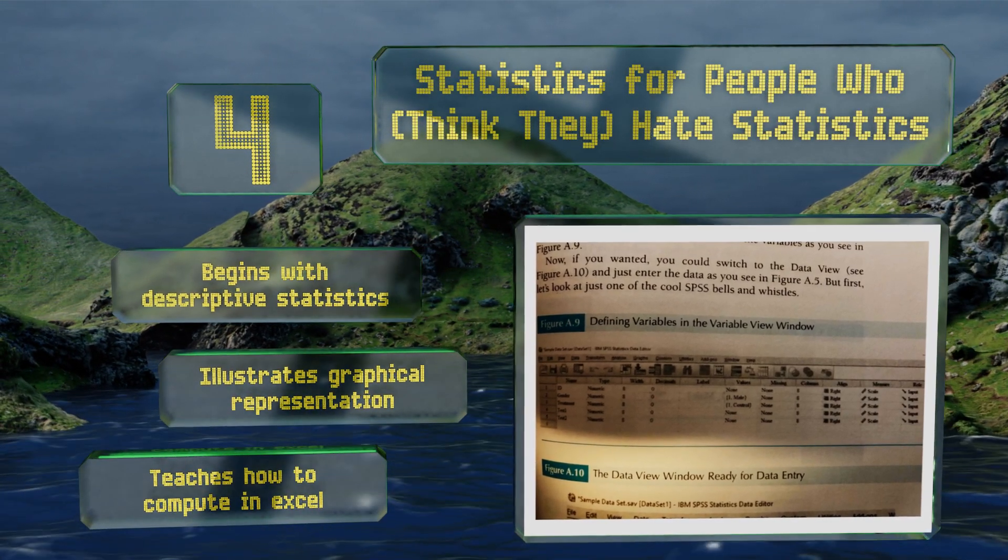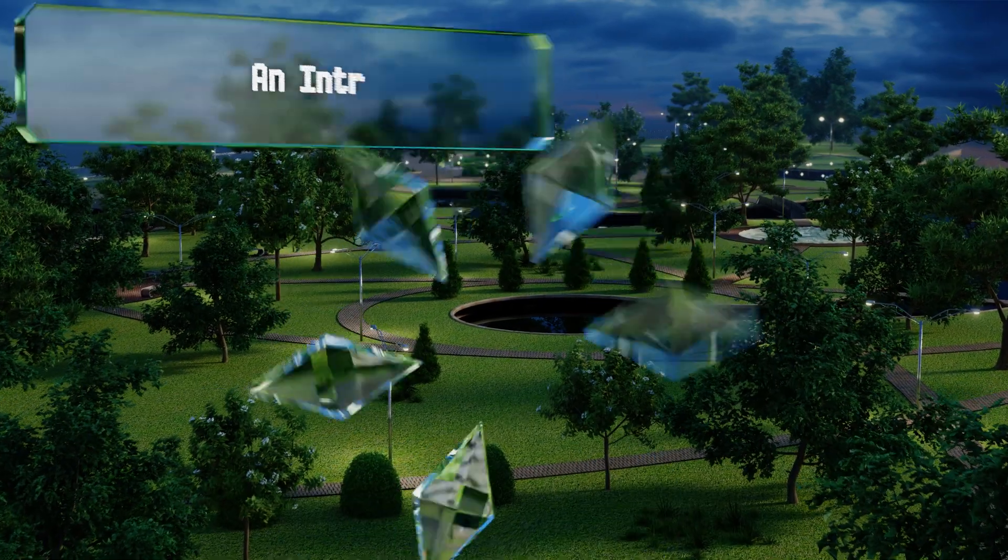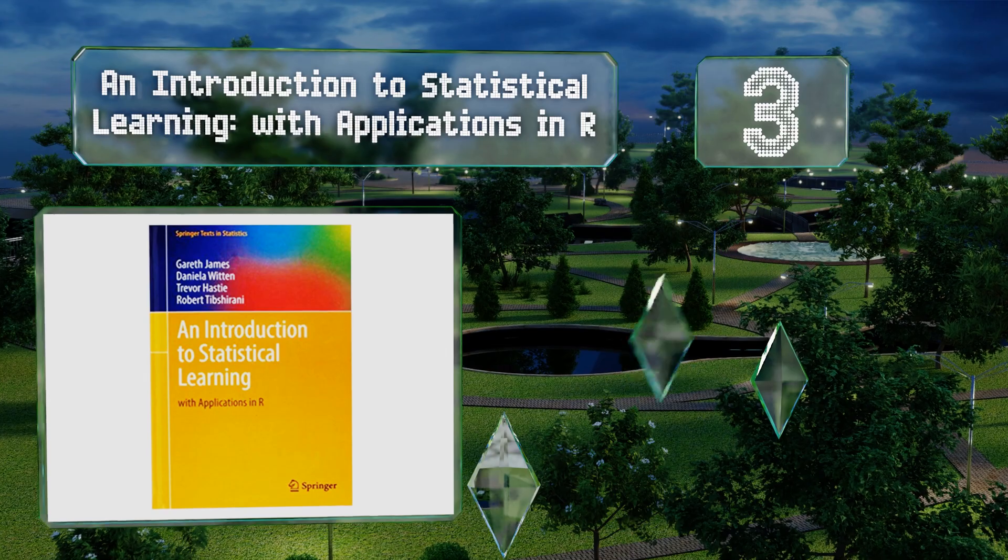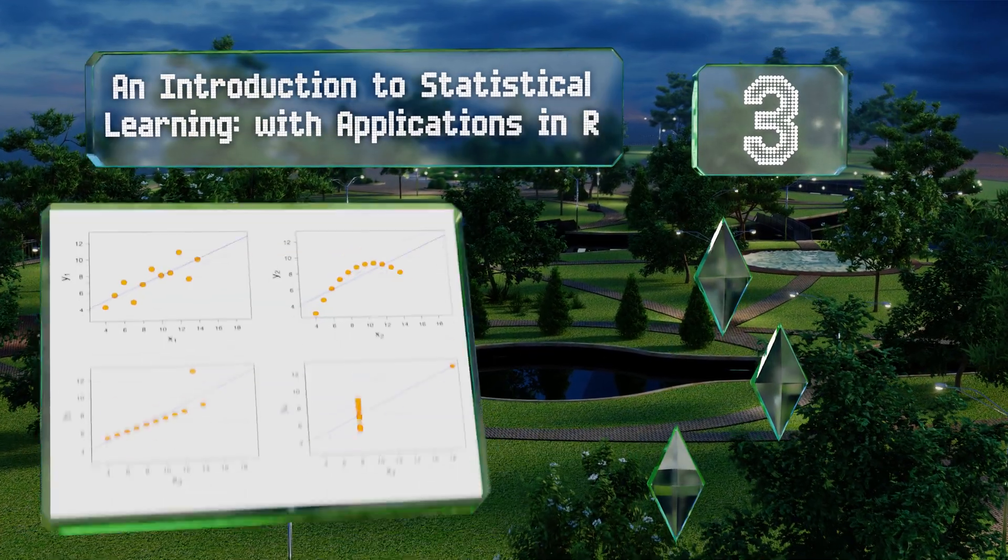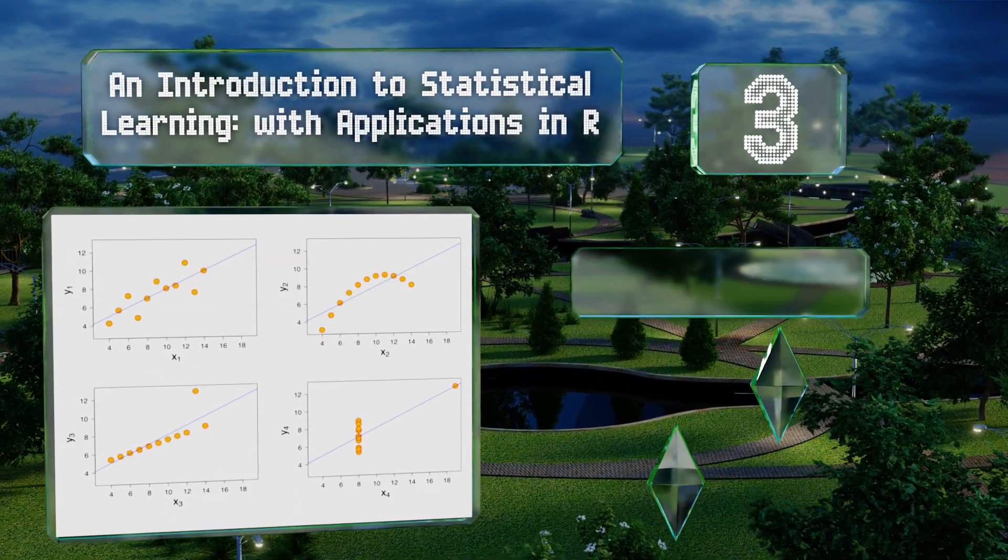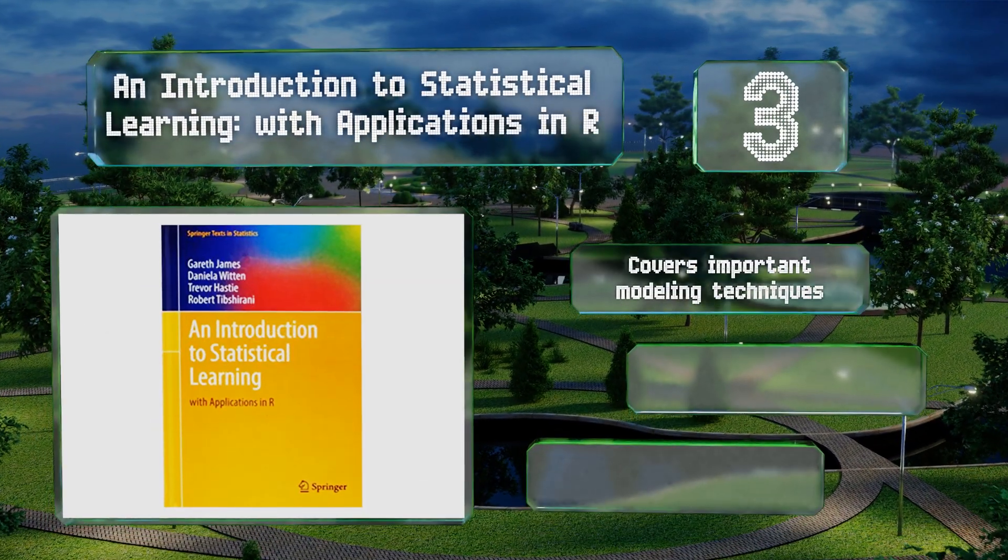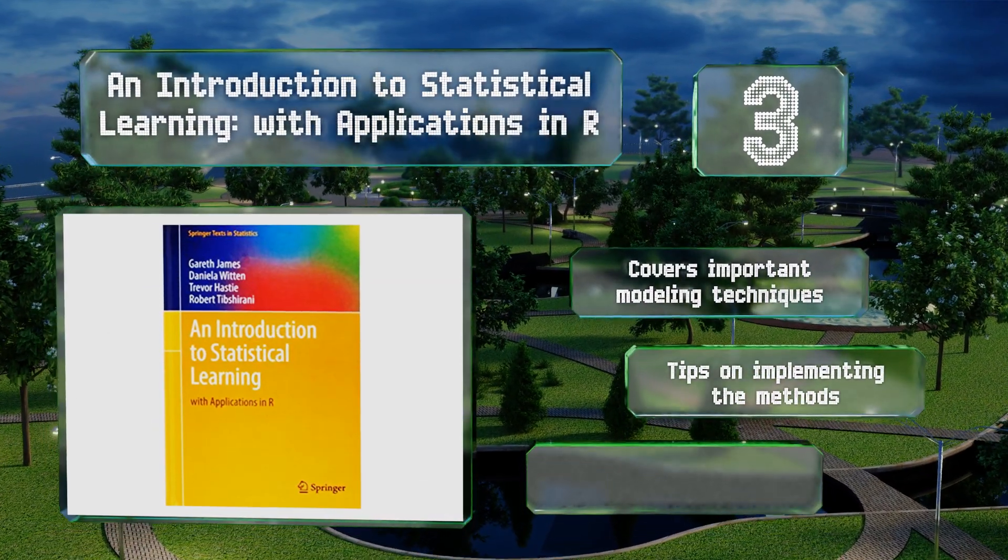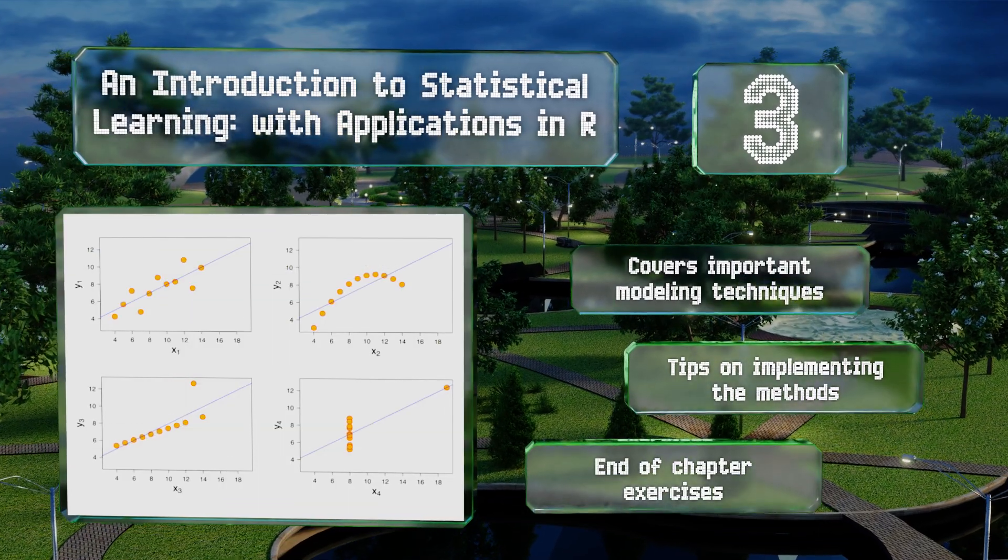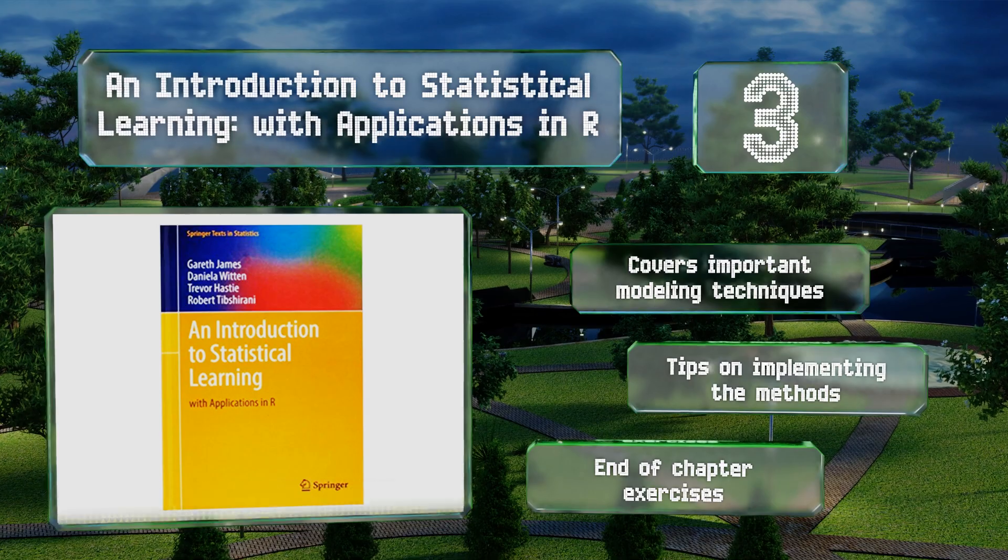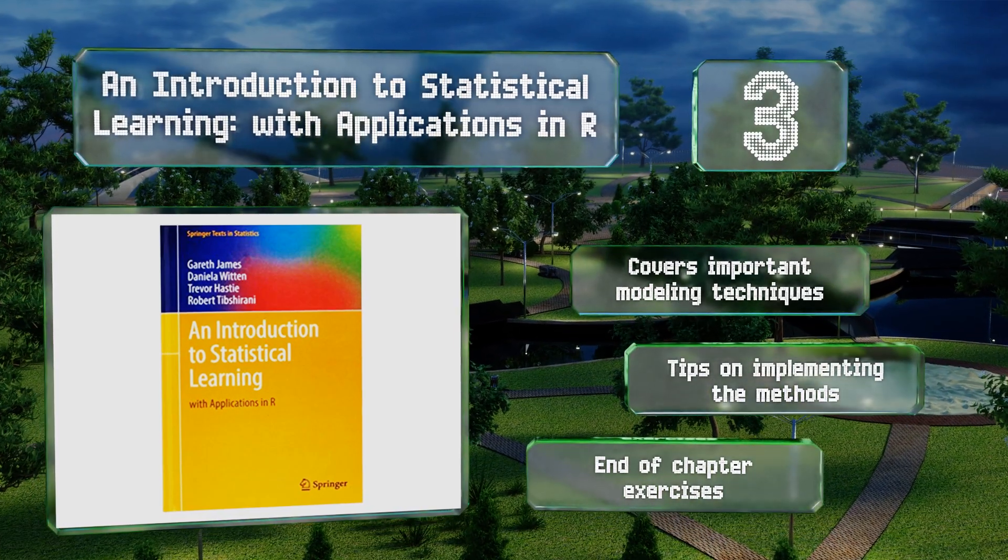It teaches you how to compute in Excel too. Nearing the top of our list at number three, An Introduction to Statistical Learning with Applications in R is a good choice for those in a range of different fields. It explains how to make sense of large and complicated data sets so you can base your conclusions on accurate information. It covers important modeling techniques and includes tips on implementing the methods and end-of-chapter exercises.